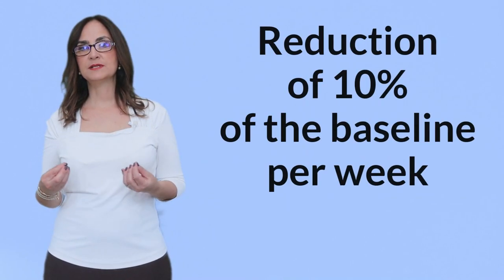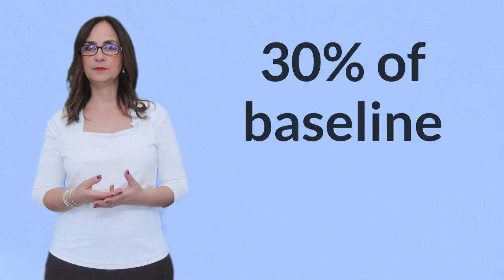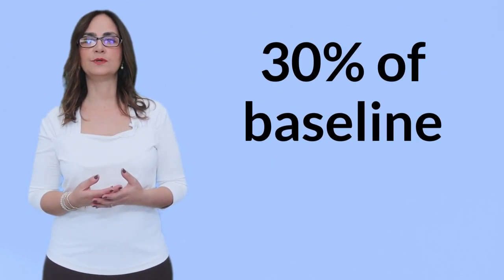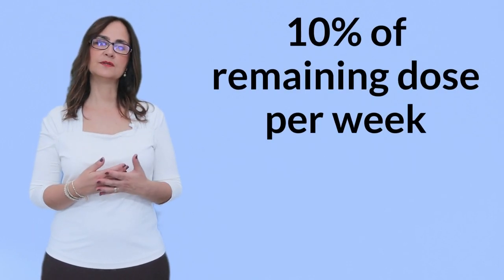The tapering plan consisted of a reduction of 10% of the baseline opioid dose per week until 30% of the baseline dose was reached, then a reduction of 10% of the remaining dose per week.